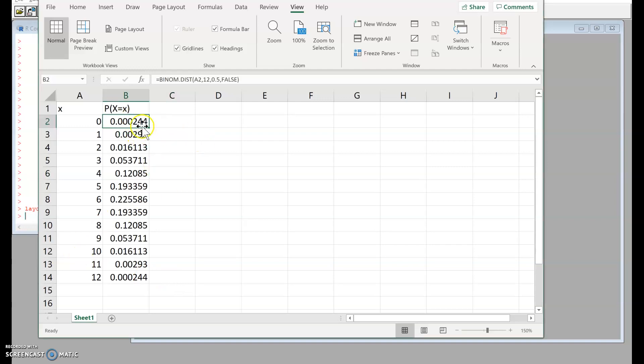Here I've set up a binomial distribution with parameters n is 12, p is a half, outcomes 0 through 12 in column A, probabilities as calculated by Excel in column B. If I add these probabilities up, Excel tells me the sum is 1.